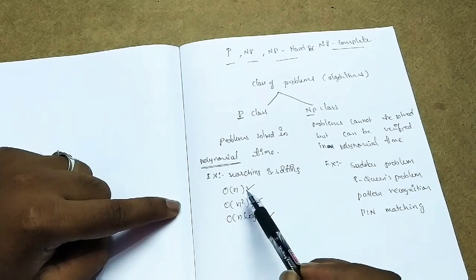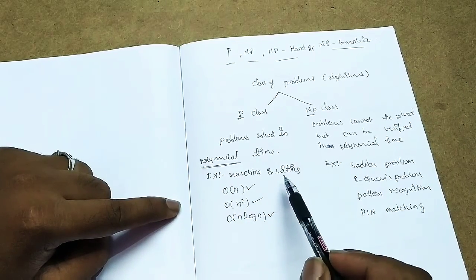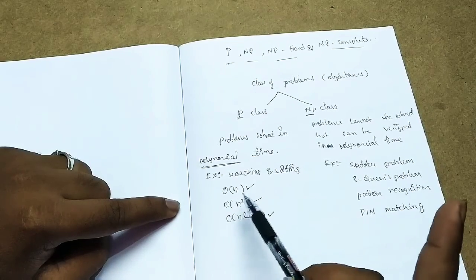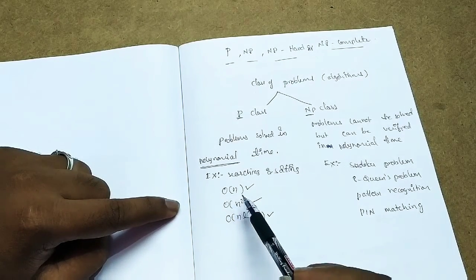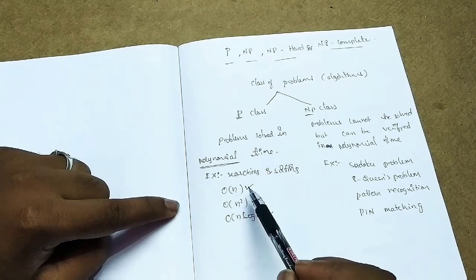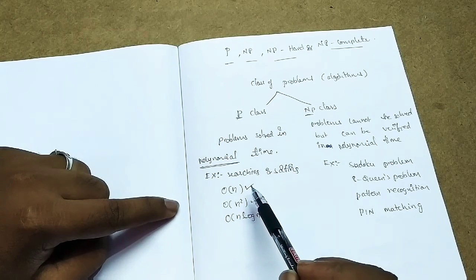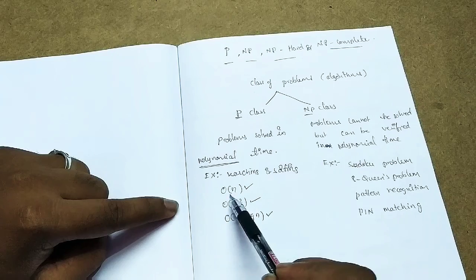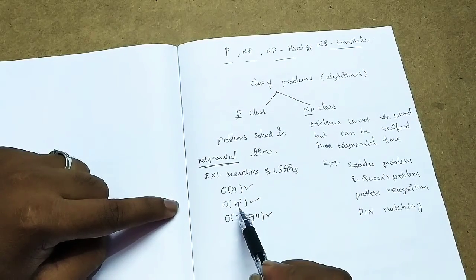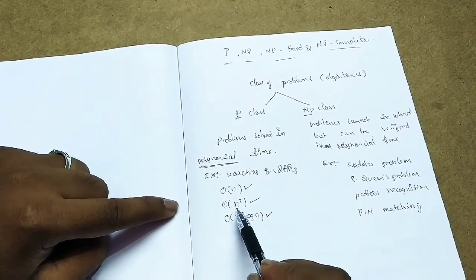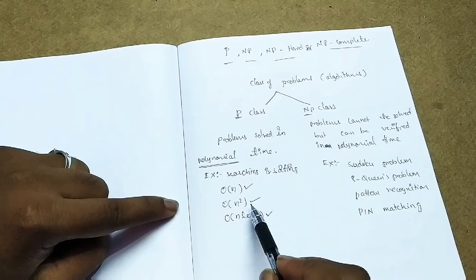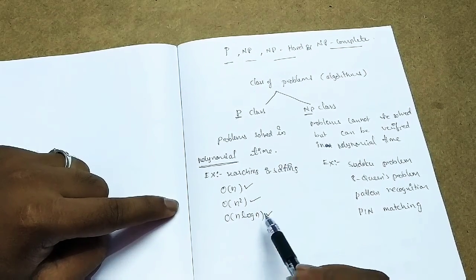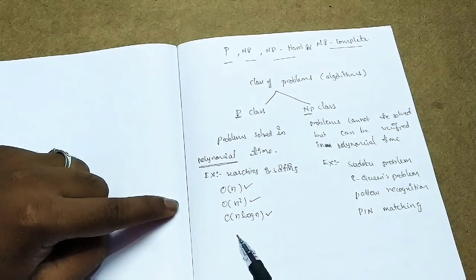Polynomial time means order of N. If you are searching through numbers, the algorithm runs for at most N times — that is order of N. For sorting algorithms, it will be order of N squared or order of N log N for other sorting algorithms.